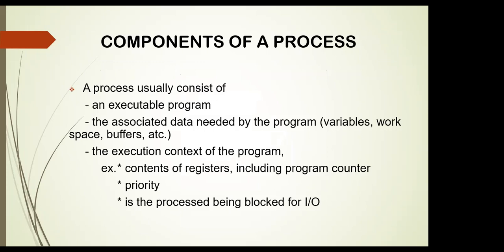Components of a process: a process usually consists of an executable program, the associated data needed by the program including variables, work space, and buffers, and the execution context of the program. Examples of context include contents of registers including the program counter, priorities, and the process being blocked for input and output.